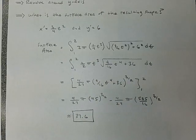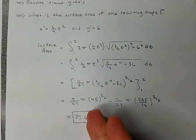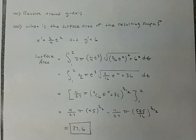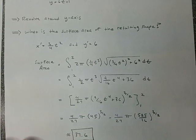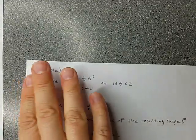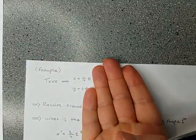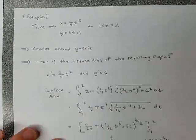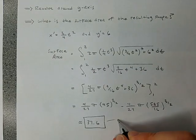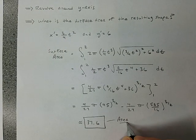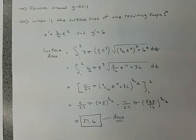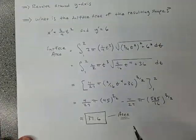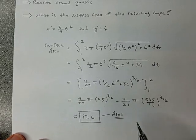Once again, the number means something: we took something flat, rotated it around, and calculated the surface area. Surface area has units of area. So don't forget your numbers and don't forget your units. If the original units are given in feet, then we would say square feet — 37.6 square feet.